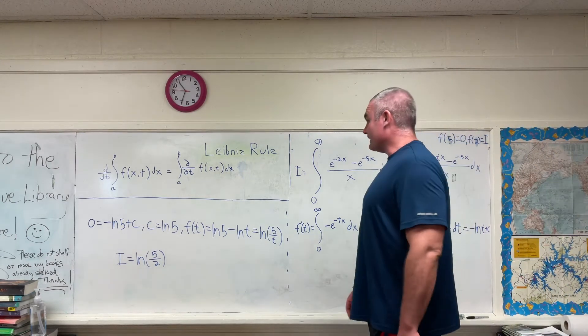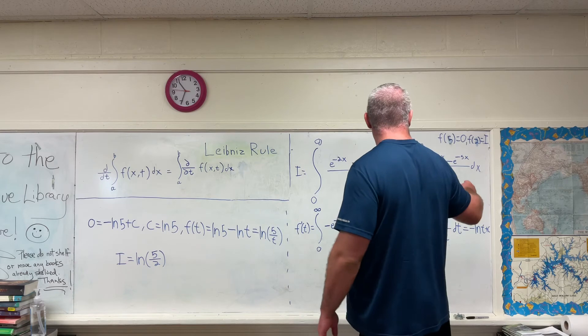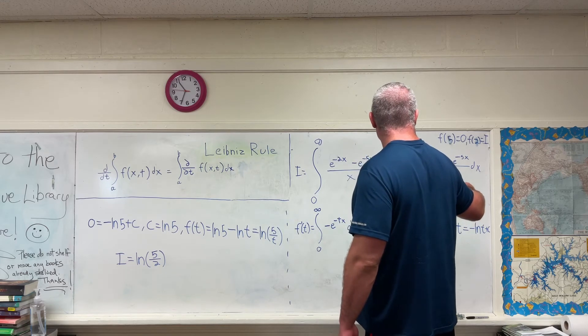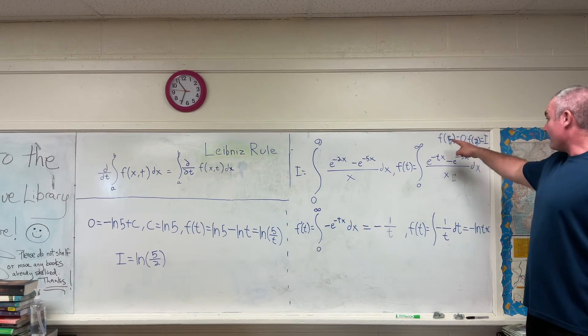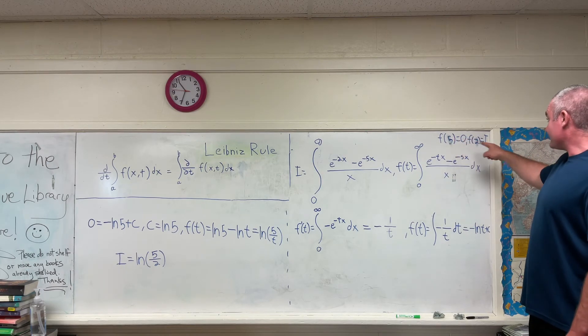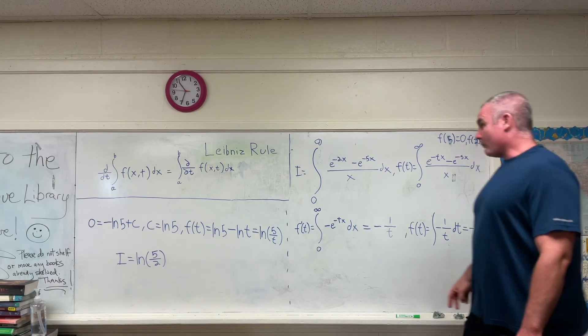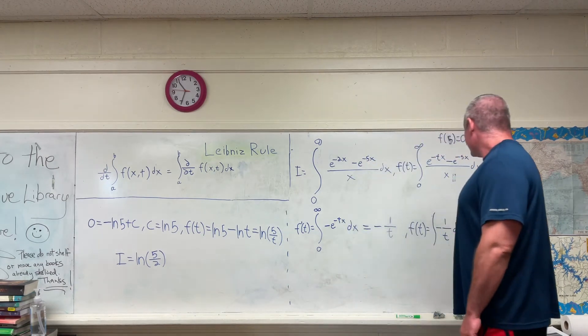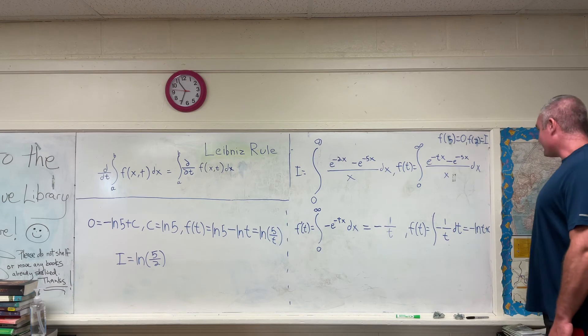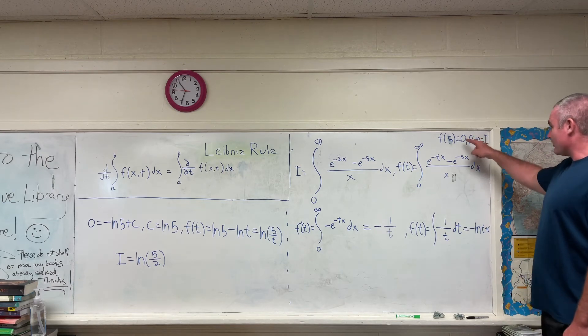Moving on, if we plug, if we use these initial values that we stated earlier, we'll get that 0 is equal to negative natural log 5 plus c.